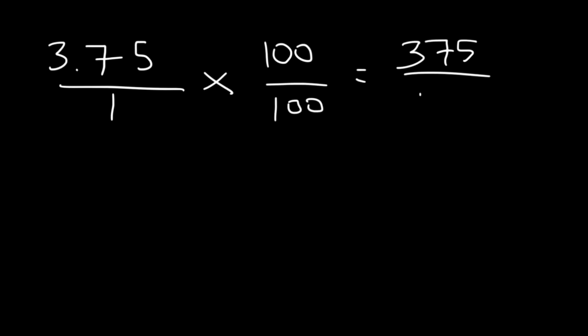Now, what about 3.75? Let's try that. So, we're going to do the same thing. We're going to multiply it by 100 over 100. And this will give us 375 over 100.